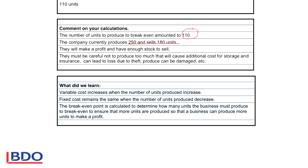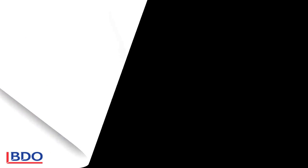Fixed cost remains the same, no matter how many units you make. So the rent, the depreciation, the salary of the factory manager will stay the same. The break even point is to calculate how many units must be produced so that you don't make a profit and you don't make a loss. Then you must ensure that you make more units than this break even point so that you will be able to make a profit.